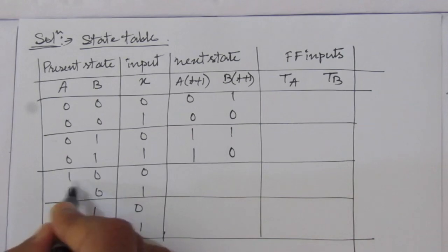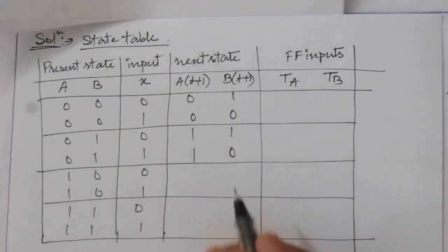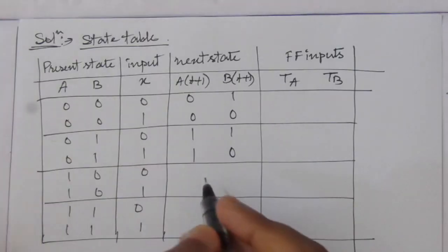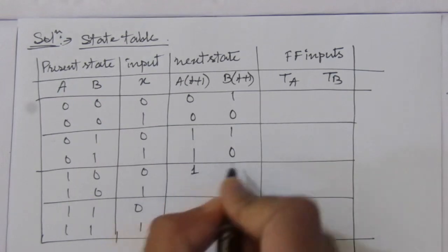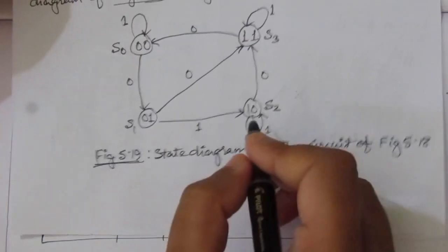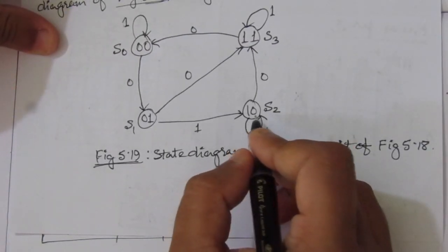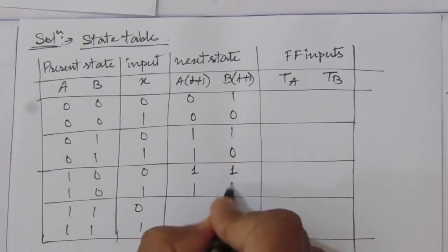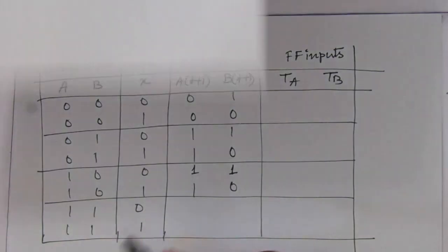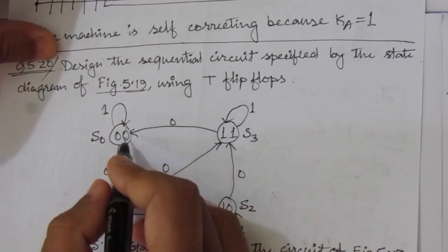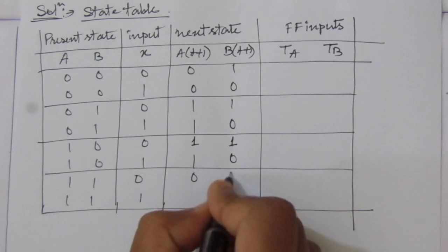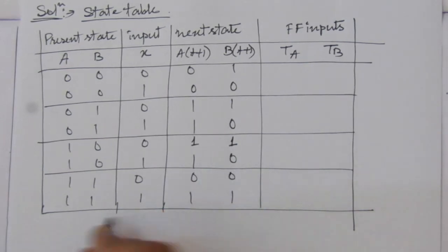Next, present state is 10 with input 0 — it goes to next state 11. From state 10, when input is 1, it remains in the same state, so next state is 10. Finally, from state 11, when input is 0, it goes to next state 00. When input is 1, it remains in the same state 11. So we have the complete present state and next state table from the state diagram.